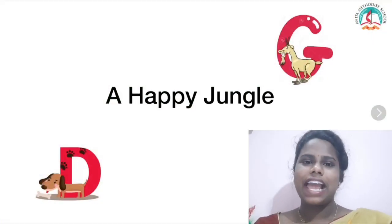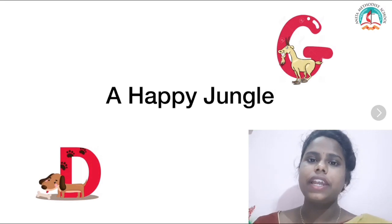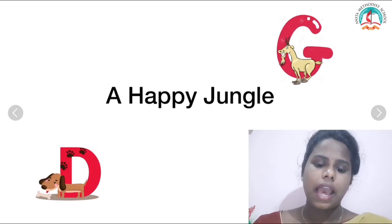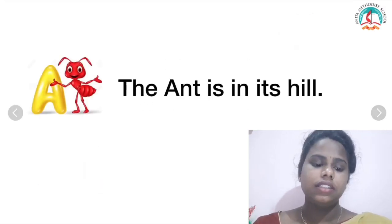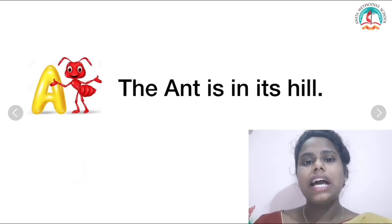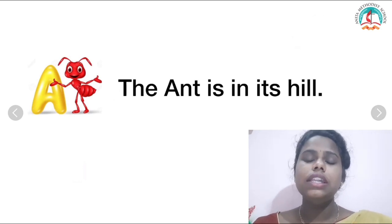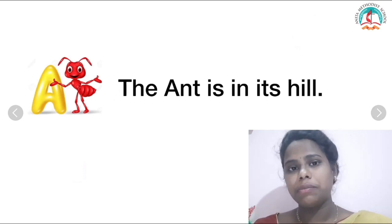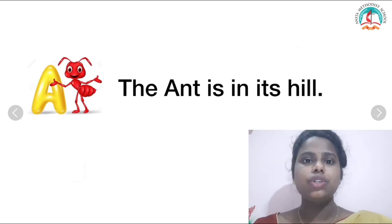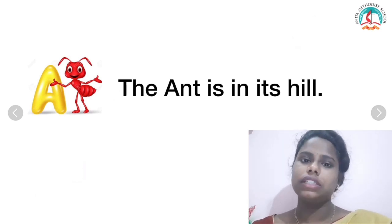Shall we learn the story Happy Jungle? In the lower class, in LKG and UKG, we would have learnt about A for apple, B for ball, isn't it? Like that, we are going to learn the names of a few birds and animals with these alphabets and we are going to read the story about that animal. Are you ready?